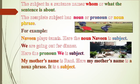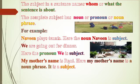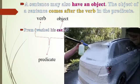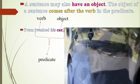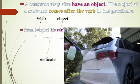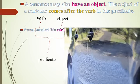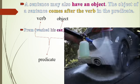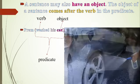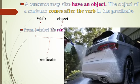A sentence may also have an object. The object of a sentence comes after the verb in the predicate. For example, 'Prem washed his car.' Here 'Prem' is the subject, 'washed' is the verb — the action word — and 'his car' is the object.